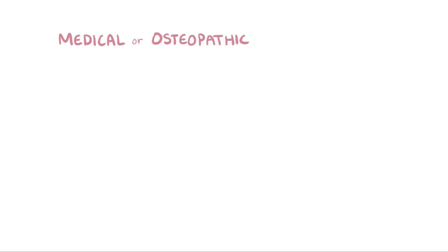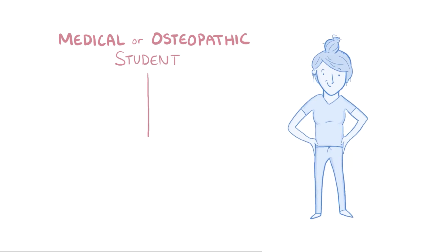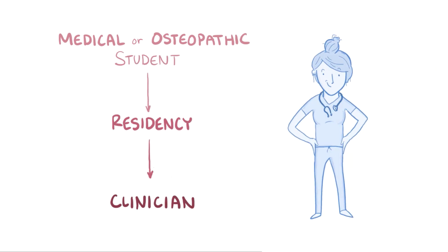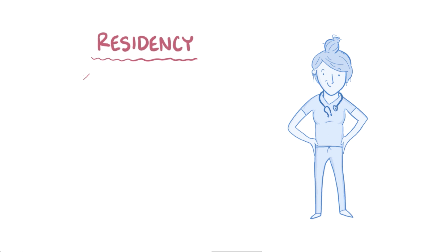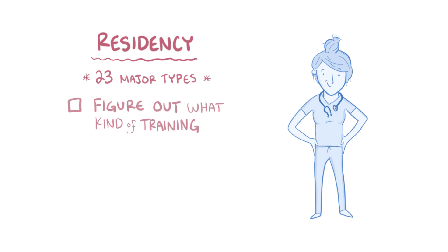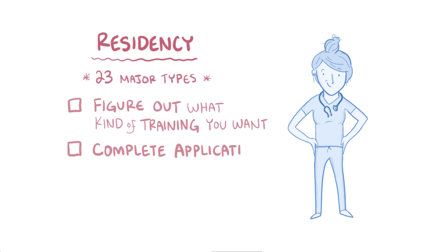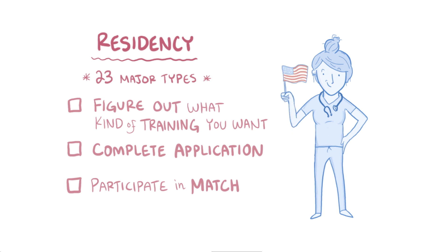For every medical or osteopathic student aspiring to be a clinician, a key stop along the way is residency. In total, there are 23 major types of residency programs, and to ultimately find one that's a good fit, you need to figure out what sort of training you're looking for, complete the application process, and participate in the match. We'll go over the specifics of applying to a U.S. residency program, but some aspects of this process are universal.